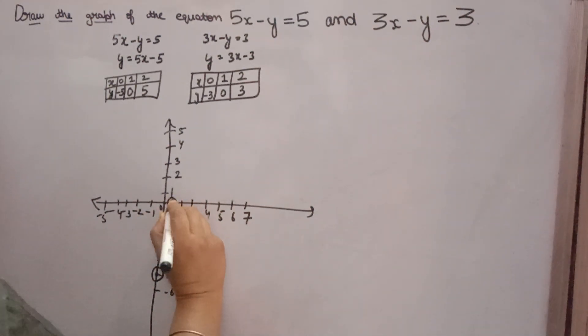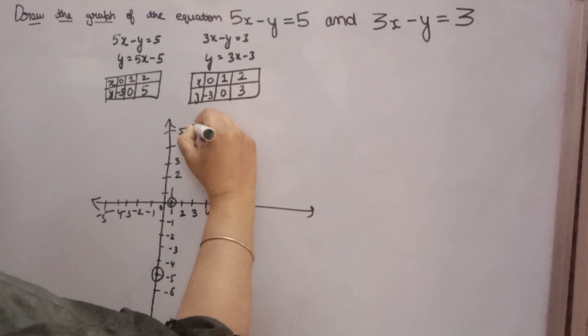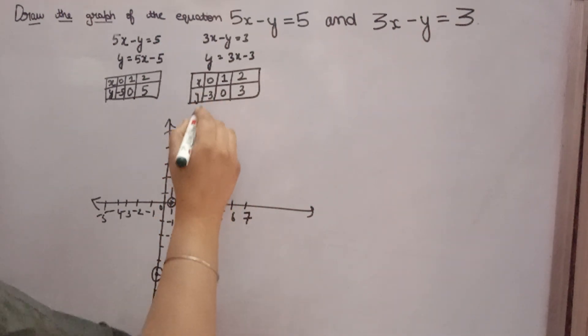x is 1, y is 0, one point will come here. Third point is x is 2, y is 5, so it will come approximately here. Now with the help of a scale on the graph paper, you have to join these three points with the help of a scale.